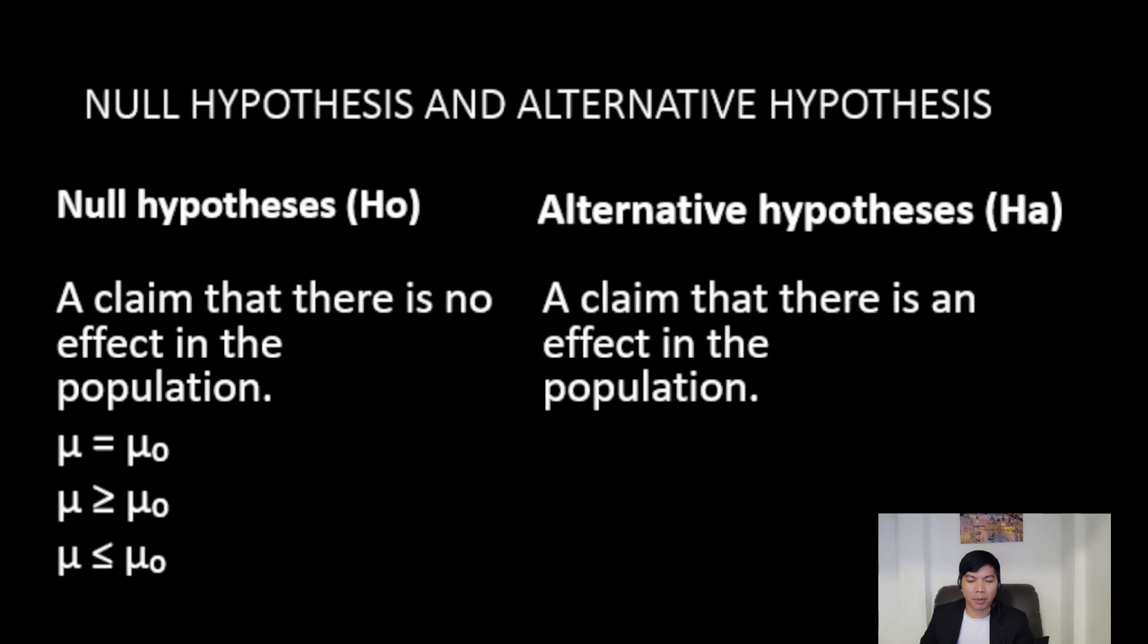While the alternative hypothesis, on the other hand, denoted as H₁ or Hₐ, is what we aim to support with evidence from our sample data. It represents the idea that there is a significant difference or effect. It's the opposite of the null hypothesis.